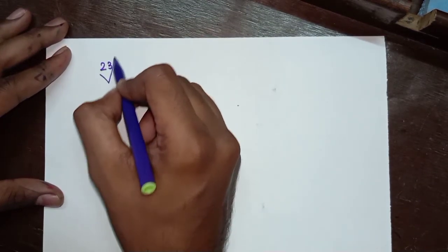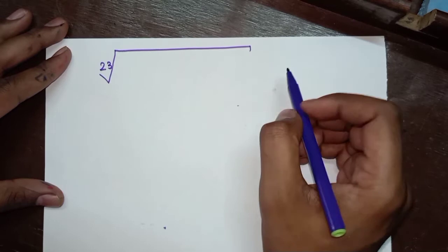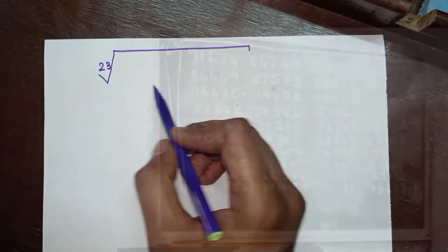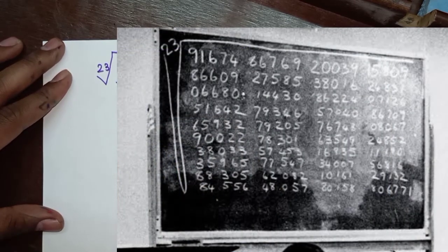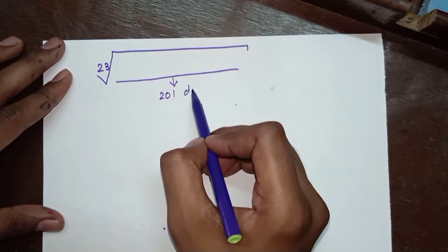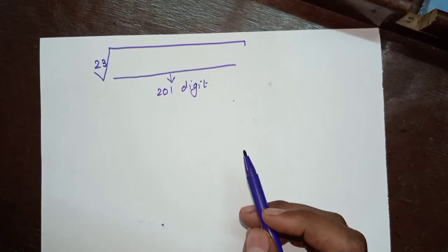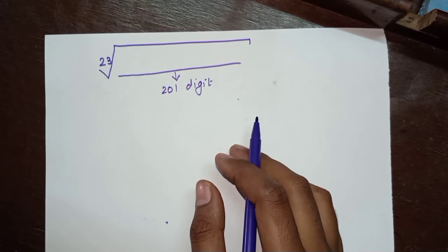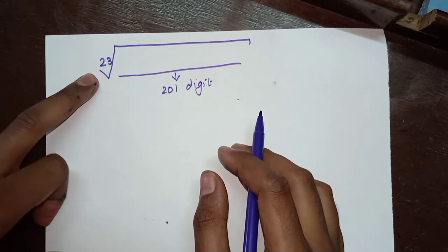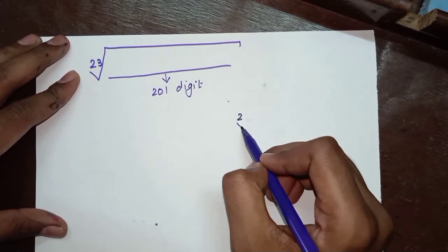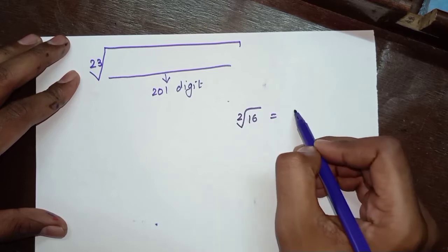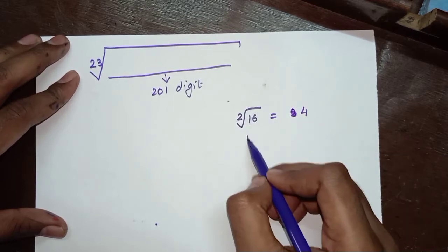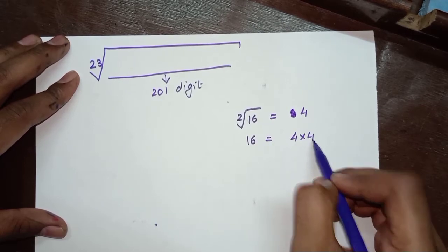Now to understand the difficulty level of the 23rd root: the number shown on screen is a 201-digit number. This is a very big number, and you don't have to find square root or cube root, but the 23rd root. Simple example: square root of 16 is 4, which means 16 is 4 multiplied with itself 2 times.